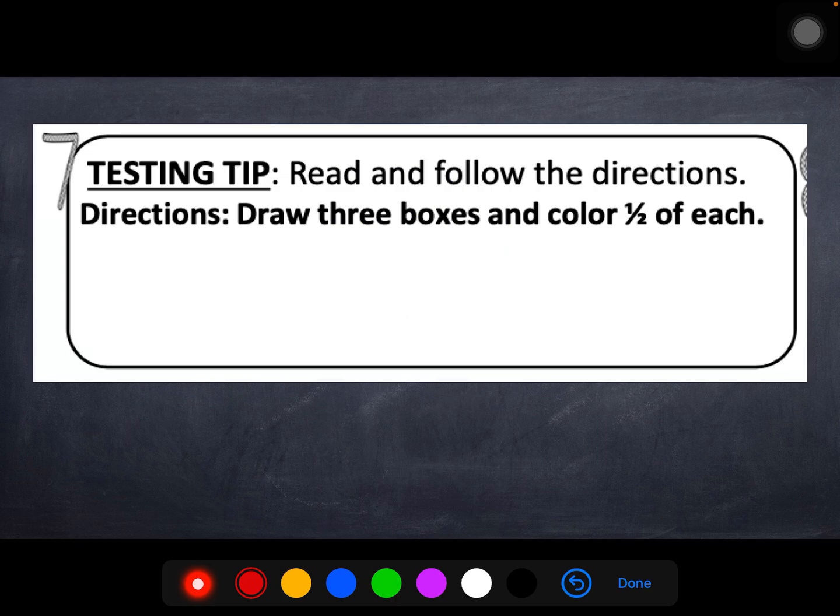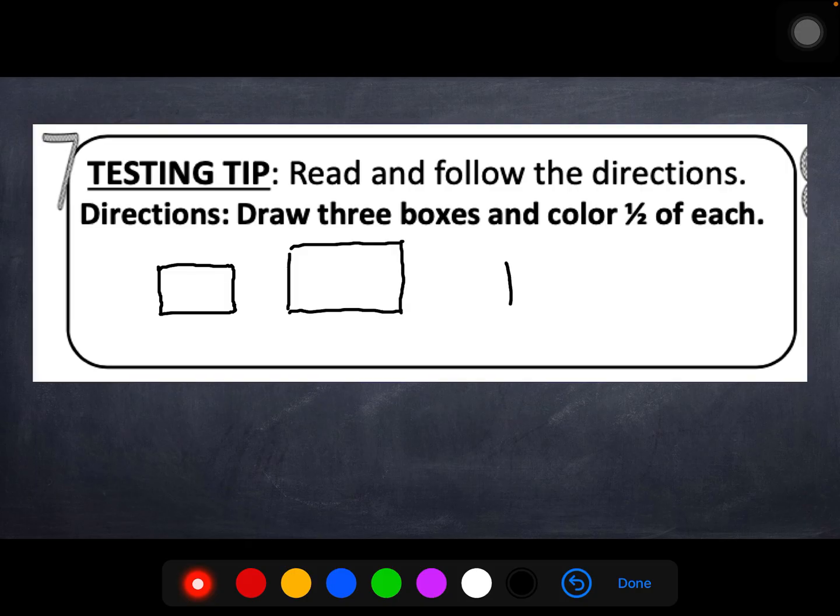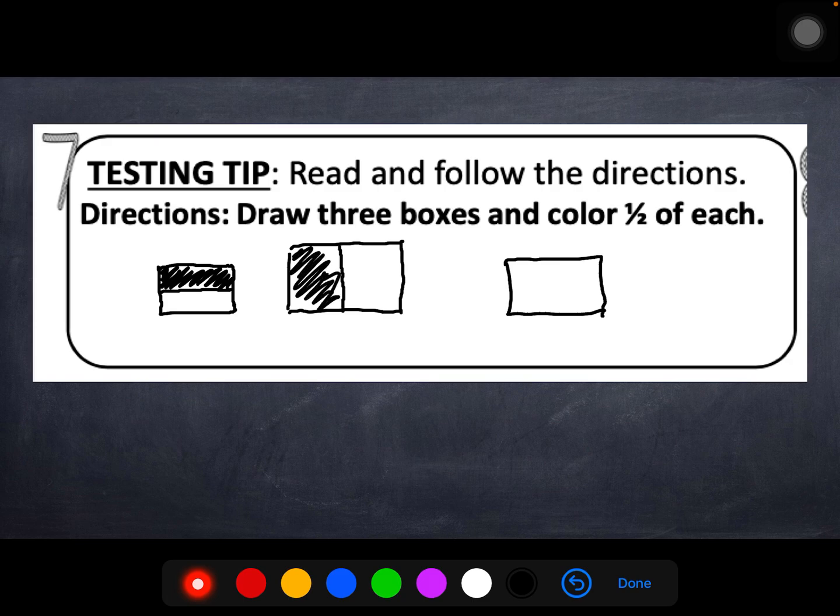Number seven. Testing tip. Read and follow the directions. Directions. Draw three boxes and color half of each. Okay. One. It doesn't say they have to be the same size. So I don't have to be careful about that. Color half of each. I'm going to be tricky here. And I'm going to color the top half. The left half. And let's do, oh, let's do this. Ha ha. There. Followed the directions.